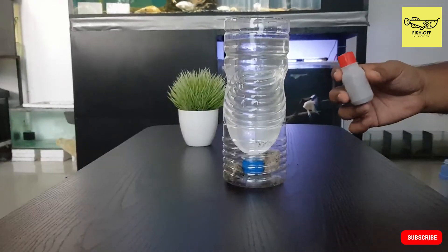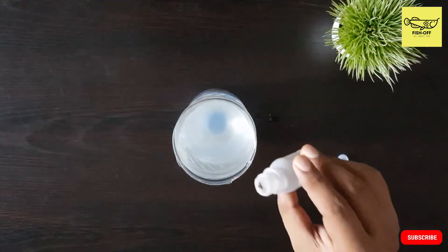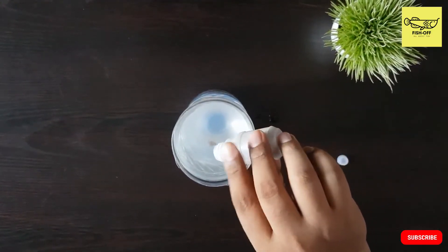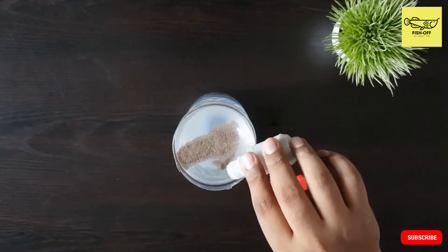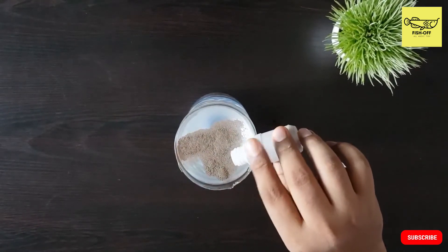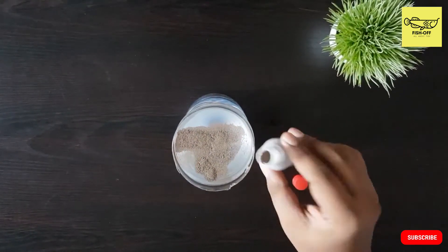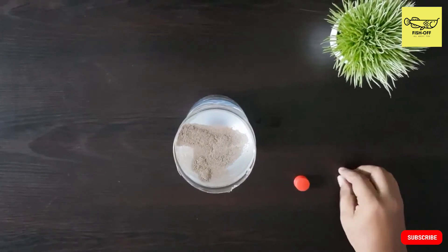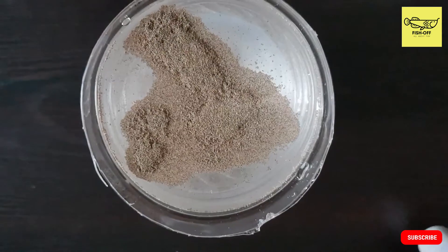Now it's time to add the brine shrimp eggs. Add about one teaspoon. As you can see, it's a very fine mixture, like sand, and it floats on the water too.